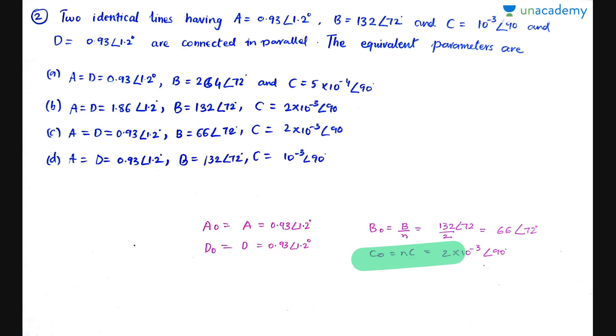C0 will be N into C. Here N is 2. 2 into 10^-3 at angle 90. So you just look at the options, then option C is going to be your right answer.